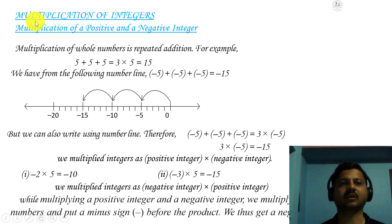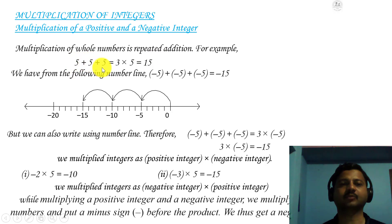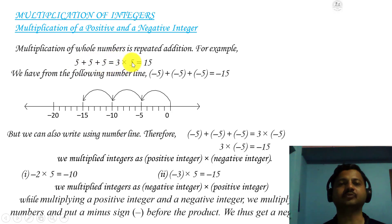Today's session we will discuss multiplication of integers — specifically multiplication of a positive and a negative integer. Multiplication of whole numbers is represented as repeated addition. For example, 5 plus 5 plus 5 equals 3 into 5, which is 15. We wrote 5 three times, so the simple form of addition is multiplication. 3 into 5 equals 15.